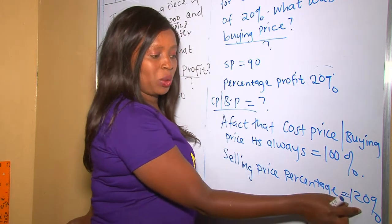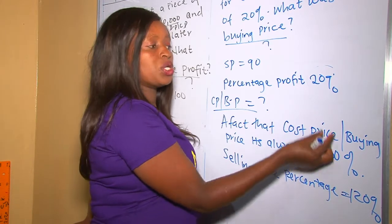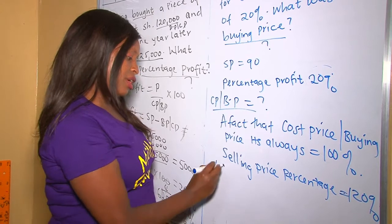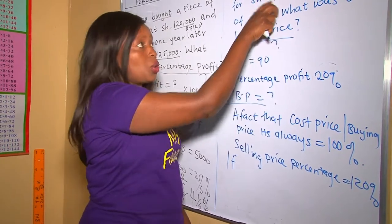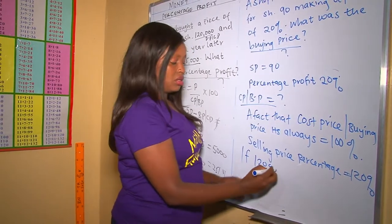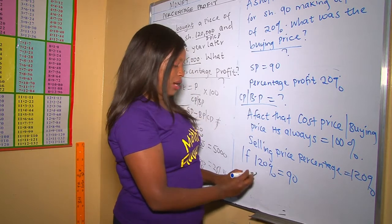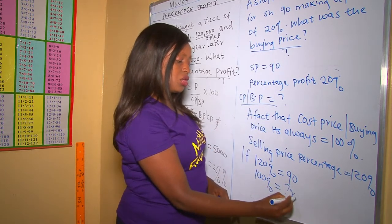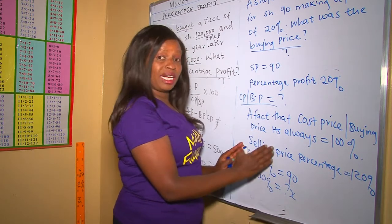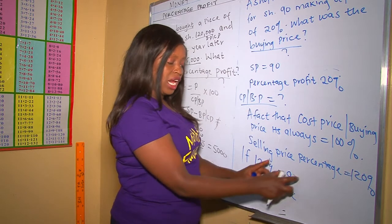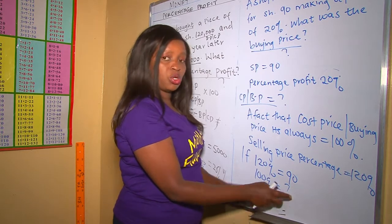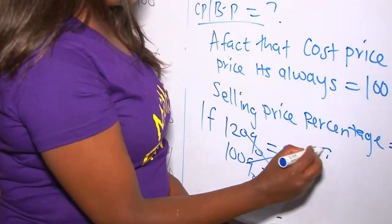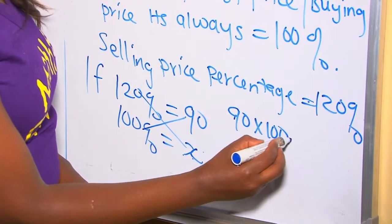In other words, if the selling price percentage is 120%, then profit equals 120% take away 100%, which gives back 20%. So we cross-multiply: if 120% equals 90 shillings, what does 100% — the buying price — equal? We call the unknown value X and cross-multiply: 90 times 100 equals 120X.